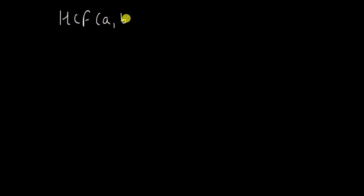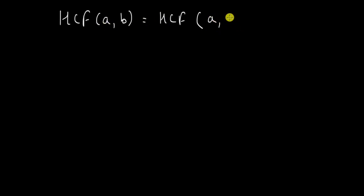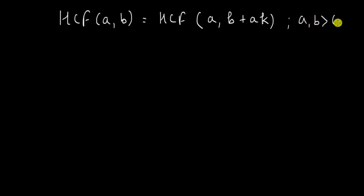In this video, let us try to prove the important property that we used in the last video and also derive some results from that property that are very useful in themselves. So we said that HCF of any two numbers is equal to the HCF of A and B plus AK, where we keep one number the same and add or subtract any multiple of the first number. Here K is an integer, so it can be positive or negative, and A and B are positive integers greater than 0.